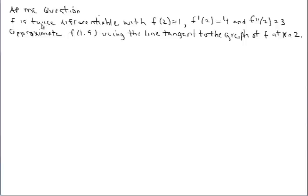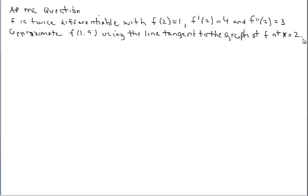We're dealing with the function f that is twice differentiable with f(2) = 1, so that point is on f. It also tells us that the slope of f at x = 2 is 4, and that the second derivative evaluated at 2 is positive 3. All this information is needed to approximate the functional value at 1.9 using the line tangent to the graph of f at x = 2.